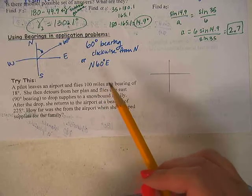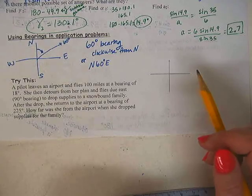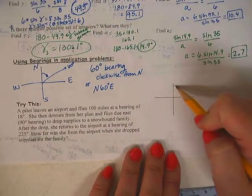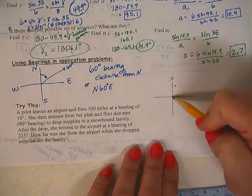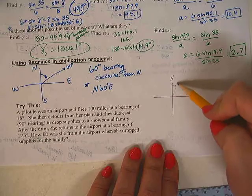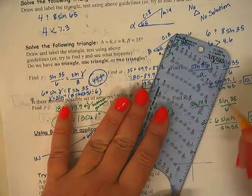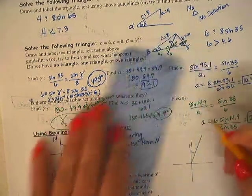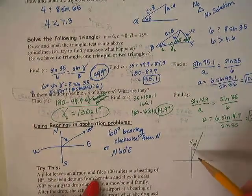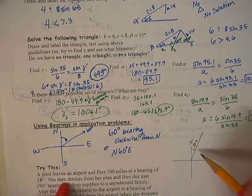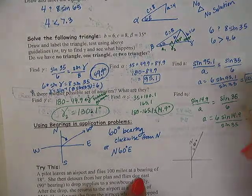If I want 100 miles at a bearing of 18 degrees, a bearing of 18 degrees would be just 18 degrees clockwise from north. That would be about right there. I'm just estimating the angle. So 18 degrees. A pilot leaves an airport and flies 100 miles at a bearing of 18 degrees. She then detours from her plan and flies due east.